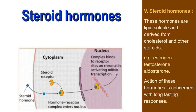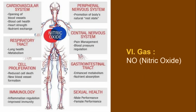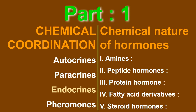The last type of chemical nature of hormones is the gas form. The hormone nitric oxide (NO) is an example, and it plays a role in coordination of the body. So in this part one video lecture, we have learned about chemical coordination and the chemical nature of hormones. Notes for this video lecture will be found in the description box. Thank you.